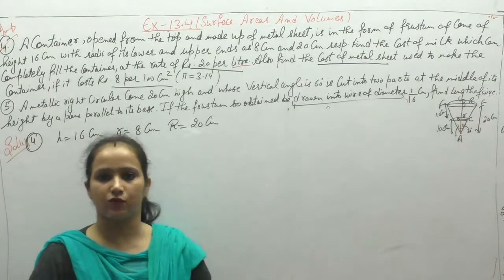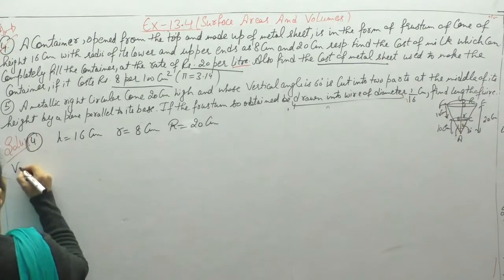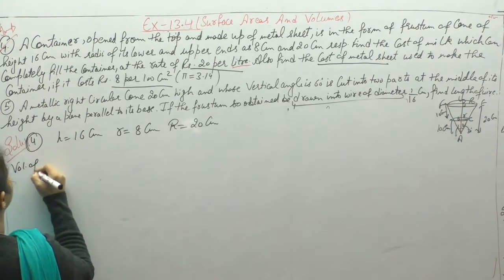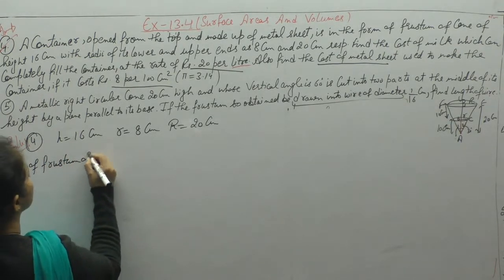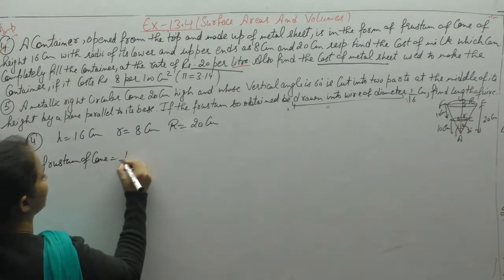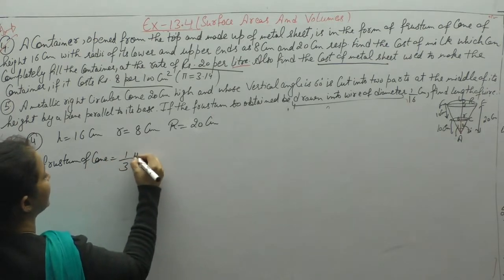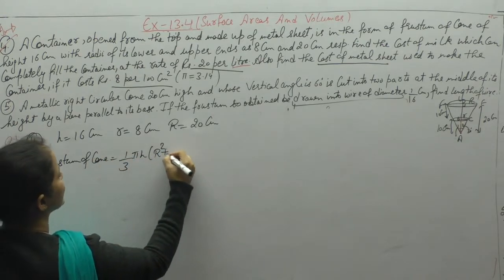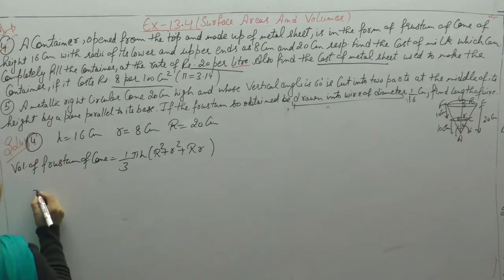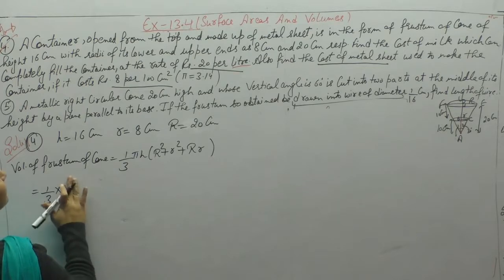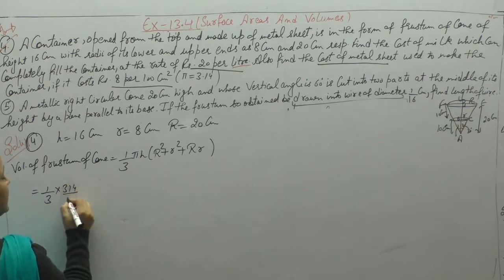Capacity means volume. We will find the volume of a frustum of a cone. Volume equals (1/3)πh(R² + r² + R×r). Put the values: π = 3.14, height = 16, capital R = 20, small r = 8.